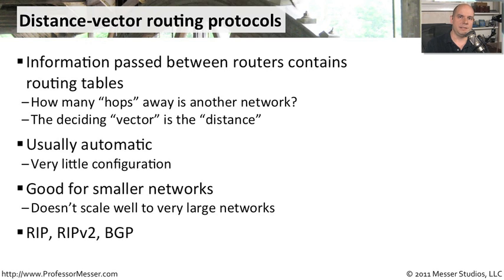A good example of this is the Routing Information Protocol, RIP v2, or perhaps BGP. Those are very much focused on how many hops it takes to get down the line to the next location. If you're running those, it's simply a matter of turning on some of those capabilities and having the dynamic aspects of that protocol handle all of that routing for you.